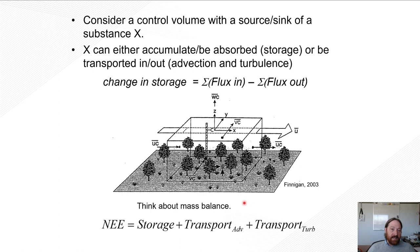So this is a fairly complex representation of a theoretical measurement volume or box over a canopy. And this was taken from Finnigan 2003. Really what we want to think about in this box for this webinar is the fluxes that are coming in and out of that box and the storage representing basically our source and sink strength. Okay, so if we consider a control volume with a source or sink strength of substance X, that X can either accumulate, be absorbed as storage, or be transported in and out of the box either by advection or by turbulence.